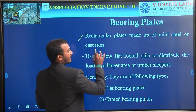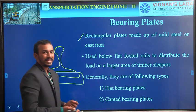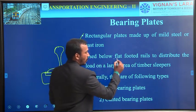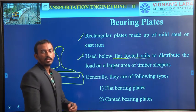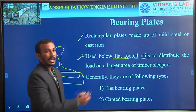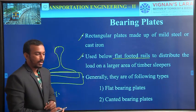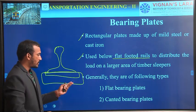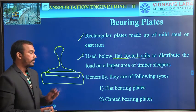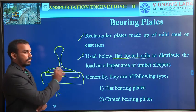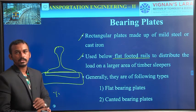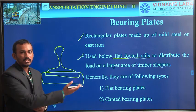These are generally rectangular plates made up of mild steel or cast iron. These are used below flat-footed rails only — we are not using them for bull-headed rails or double-headed rails. Their purpose is to distribute the load over a large area on timber sleepers. If the sleeper is not timber — if it is a steel sleeper or concrete sleeper — there is generally no need for bearing plates, unless the loads are very, very high.